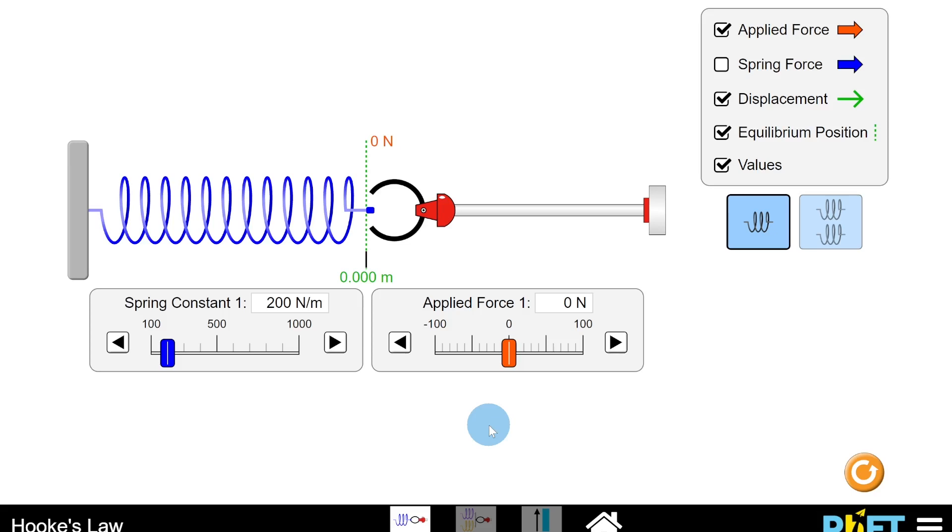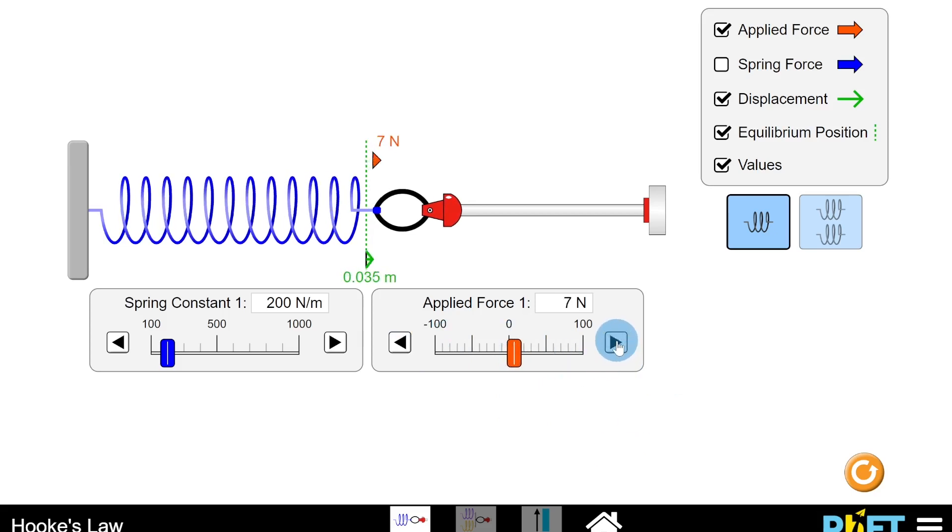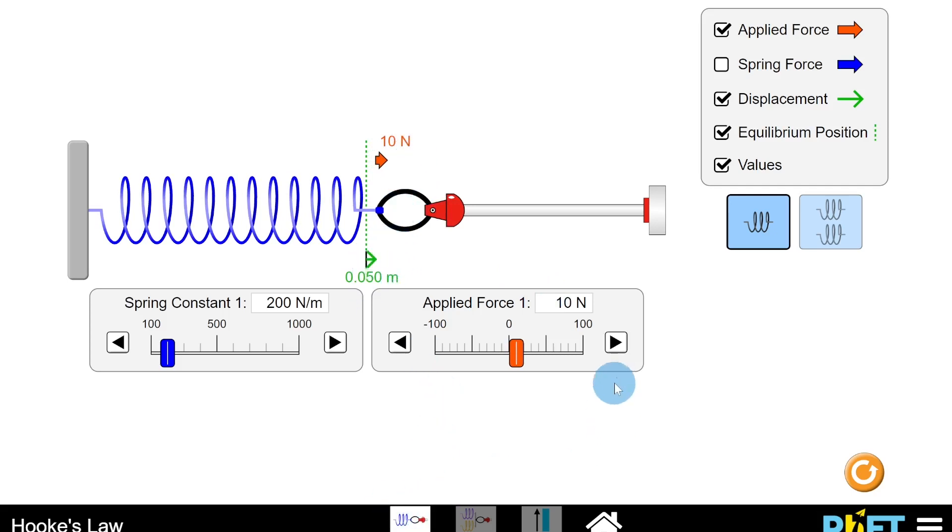Then you could plot this on a graph of displacement against force and then find the gradient from your graph, which I'll show you in a minute. But you'll see here if I change the applied force, let's say in steps of 10 newtons, then you can see how that changes the displacement of the spring from its equilibrium position. So if I went up every 10 newtons and then took down the value of the displacement, I could then plot those values on a graph.